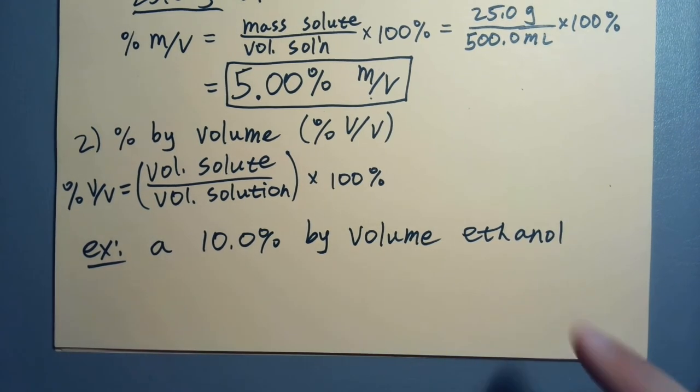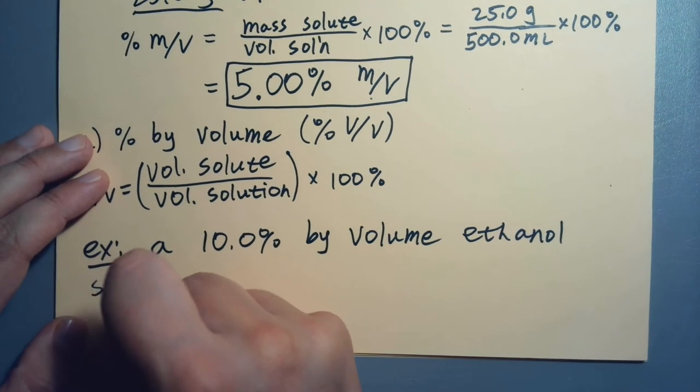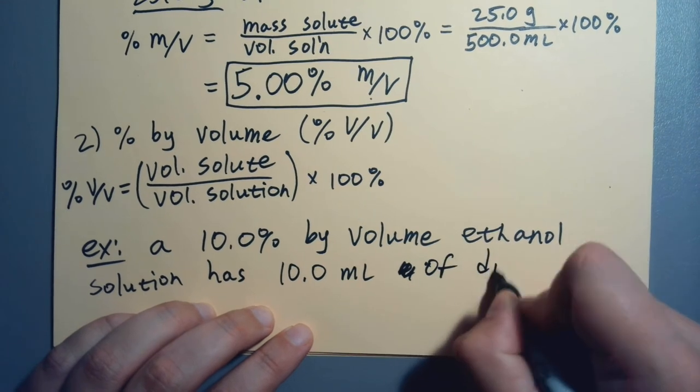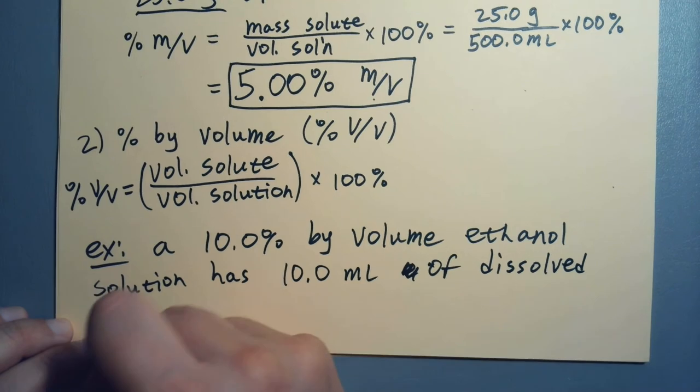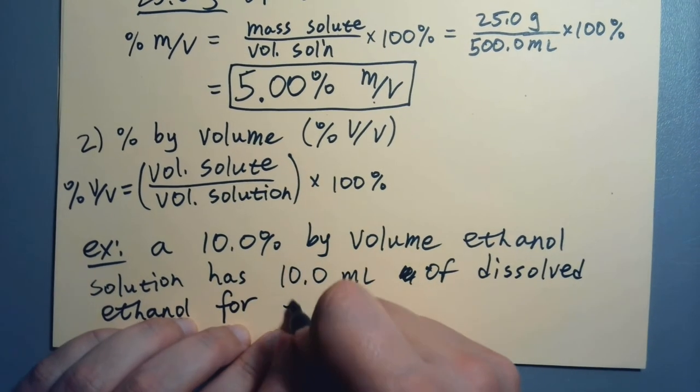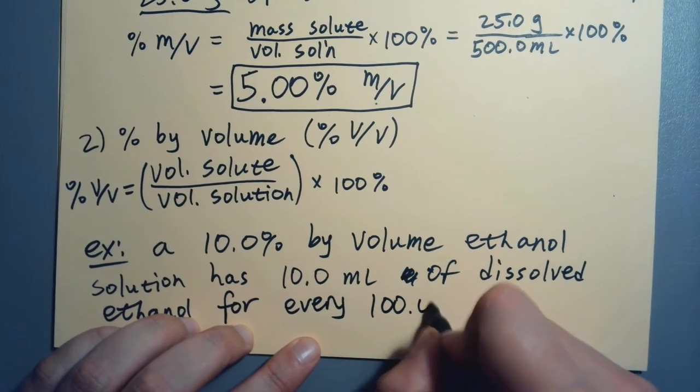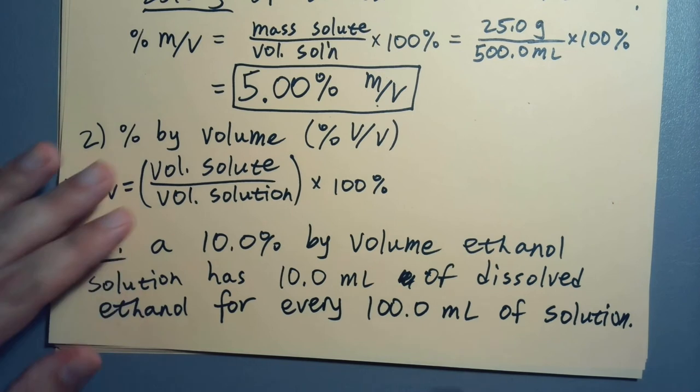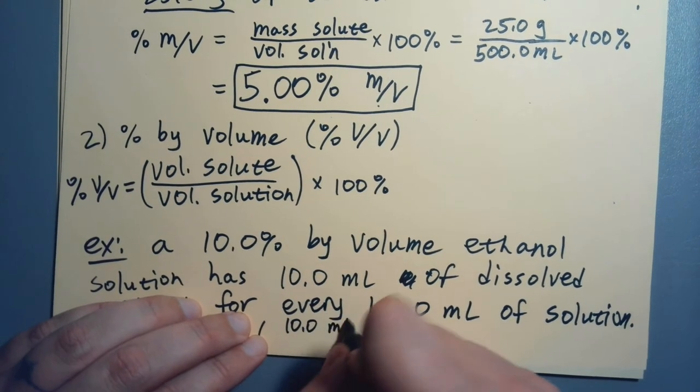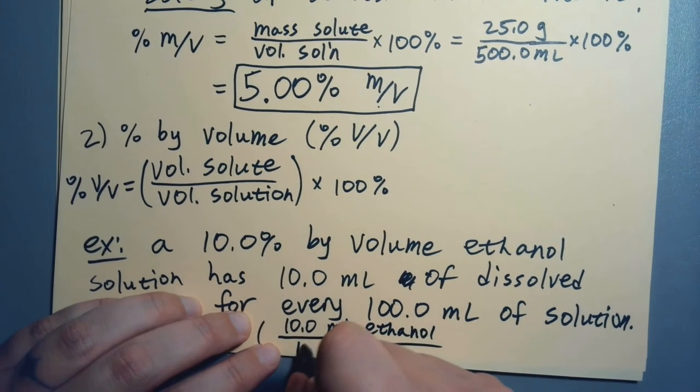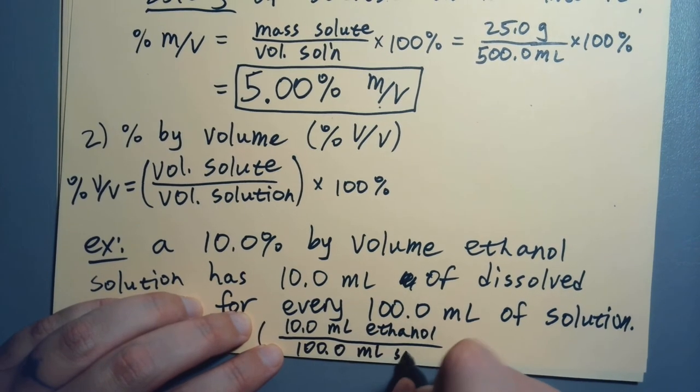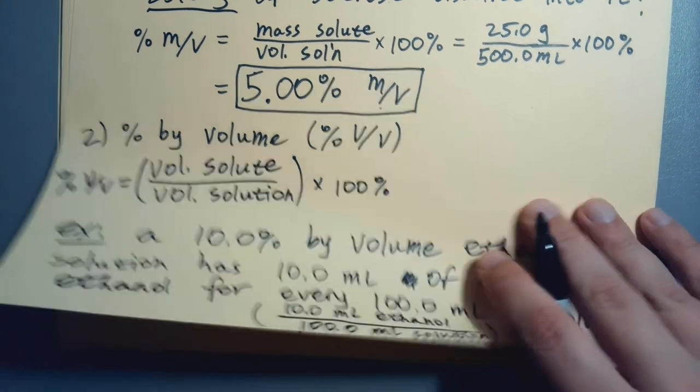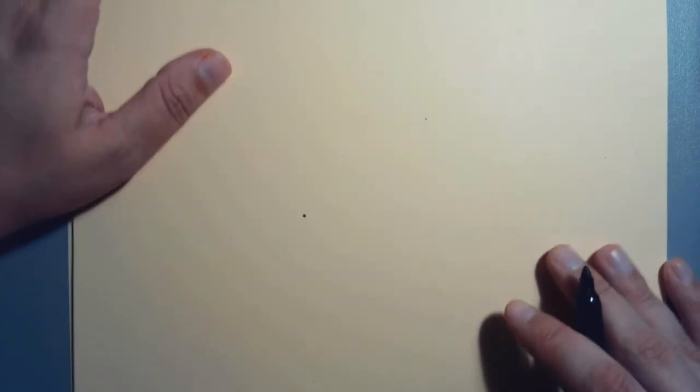If we have a 10.0% by volume ethanol solution, that means it has 10.0 milliliters of dissolved ethanol for every 100.0 milliliters of solution. So we can set up a conversion factor: 10.0 milliliters of ethanol over 100.0 milliliters of solution. These units of concentration are kind of like compound units. You can use them to set up conversion factors.